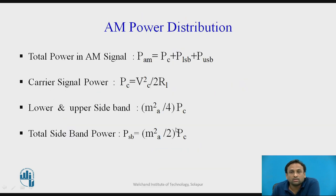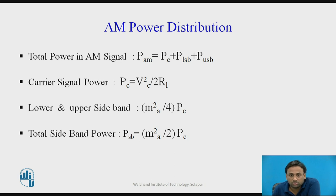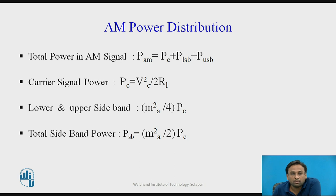Now we will see the AM power distribution. The total power in an AM signal has three components: Pc (power in carrier), P_LSB (power in lower sideband), and P_USB (power in upper sideband). All three are required to transmit the total AM signal. The carrier signal power is Pc = Vc² / (2·RL).